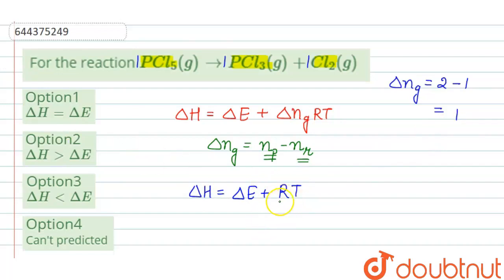Since a positive term is being added to delta E, which makes delta H greater than delta E, our correct option will be option 2.